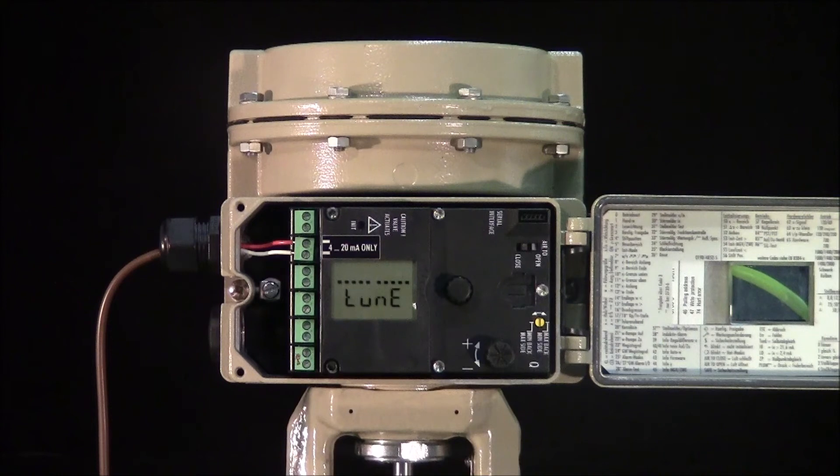Once the calibration is completed, the display will briefly show tune and then revert to the position specified by the control signal. In this case, we've set it to 12 mA or approximately 50% as indicated by the display.